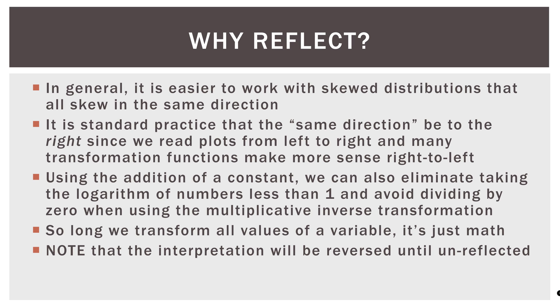Now note that the interpretation will be reversed until that variable is unreflected. So if we make a transformation, add a constant to it, we have to keep in mind that the interpretation of our coefficients are potentially going to be a lot different than they were before reflection. Now, of course, the variable can be unreflected at the end, but we always have to keep in mind where we are in terms of our transformation and our interpretation.